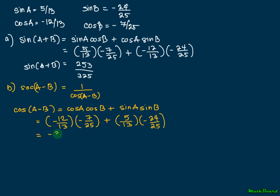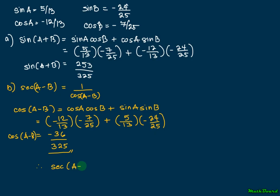So the value of cosine(A minus B) is negative 36 over 325. Therefore, the value of secant(A minus B) is just the reciprocal of negative 36 over 325, which is negative 325 over 36.